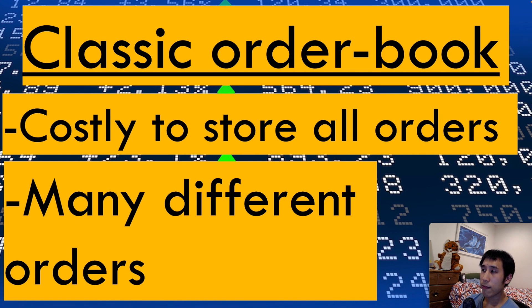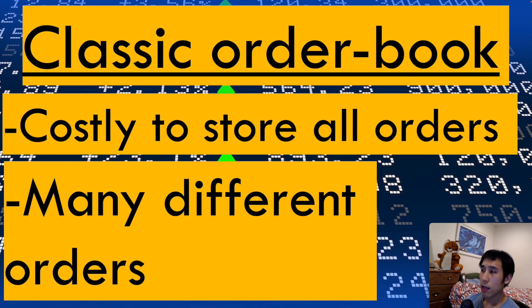Implementing this order book mechanism on smart contracts is quite difficult. There can be a large number of outstanding buy and sell orders at any time, and storing every single one on the blockchain can be very expensive. People have proposed workarounds, for example by storing data offline or off-chain, but that can be very complicated and insecure. In addition, there are many different types of orders, such as buy orders or limit orders, which can also make the smart contract code very complicated.